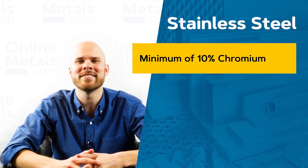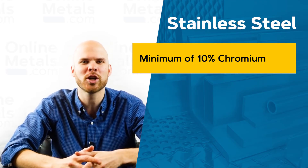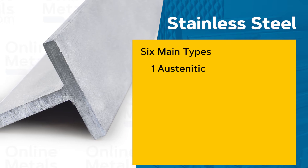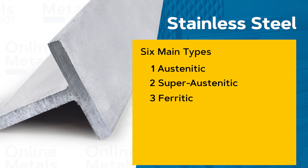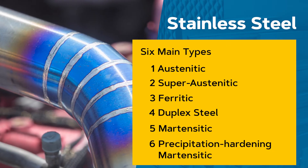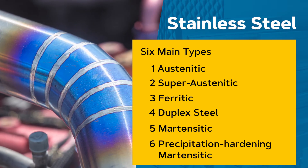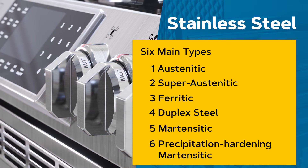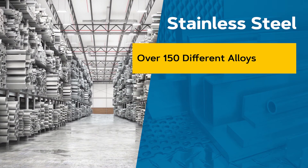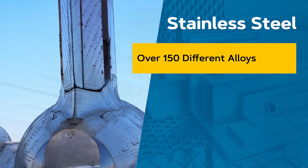Stainless steel is a steel that has a minimum of 10.5 percent chromium. This high chromium and carbon content are what gives stainless steel its iconic corrosion resistance, strength, and hardness. There are six main types of stainless steel: austenitic, super austenitic, ferritic, duplex steel, martensitic, and precipitation hardening martensitic. At present there are over 150 specific alloys of stainless, which is why stainless steel is used in everything from medical equipment and cheap knives at mall kiosks to spacecraft and airplane hulls.